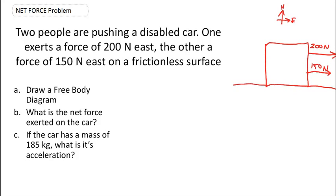Altogether, I have 350 newtons rightward. To complete the free body diagram, I need to include the other forces involved too. Acting on this object will be the force of gravity, also known as the weight of the object, equal to mass times the acceleration due to gravity. The other force is the normal force — the force perpendicular to the surface. We've also been told this is a frictionless surface, so we don't have to worry about a friction force working in the leftward direction.